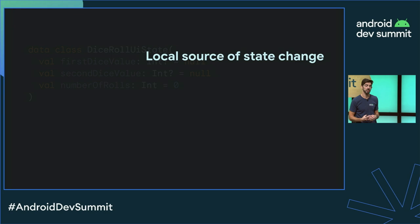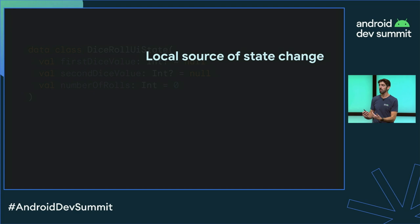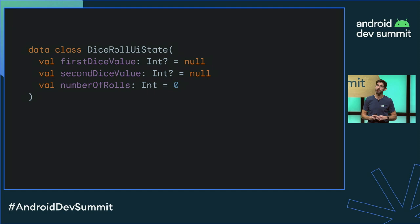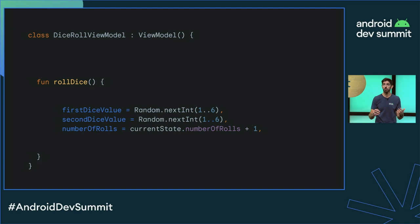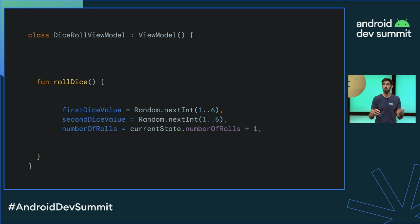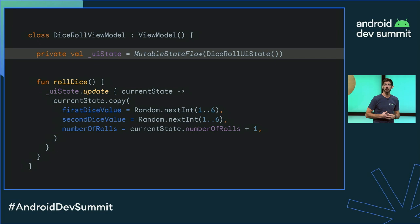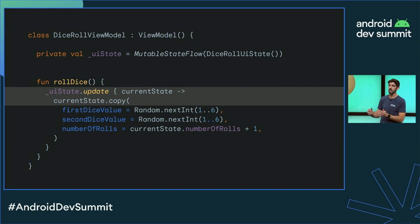Starting with a local source of state change: imagine an application that allows the user to roll the dice. The screen UI state contains some dice values and the number of rolls. The business logic to roll the dice is present in the ViewModel using one-shot APIs — the random API. We model the UI state using a private MutableStateFlow of type DiceRollUiState. Whenever we get the user event, we update our UI state by calling the random APIs synchronously. If the UI wants to listen to these state changes, it collects from the public StateFlow, which is a read-only version of the internal state.